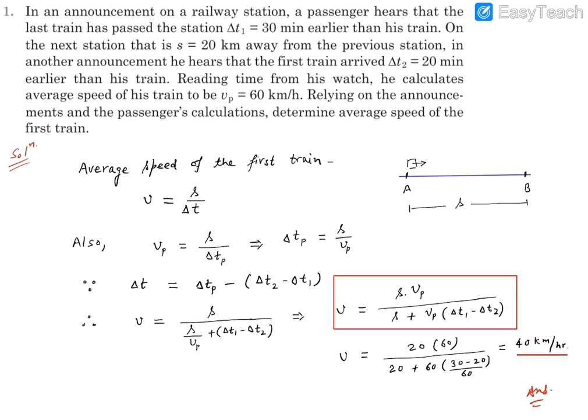If we use this relation on this expression, V will come out as S divided by Delta Tp minus Delta T2 minus Delta T1. Delta Tp could be written as S upon Vp. Let's take this minus outside, so that will be plus and it will become Delta T1 minus Delta T2.